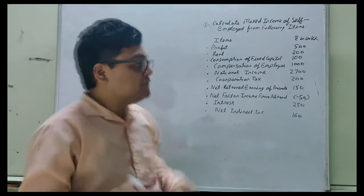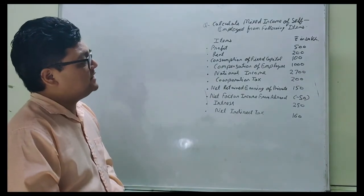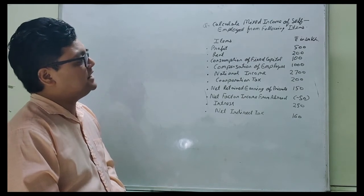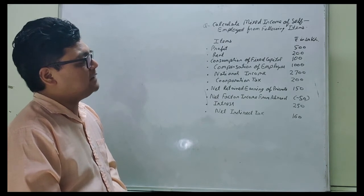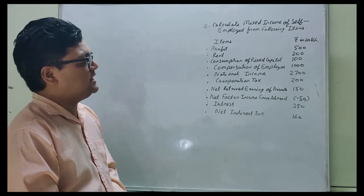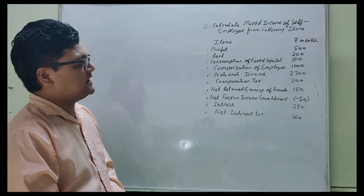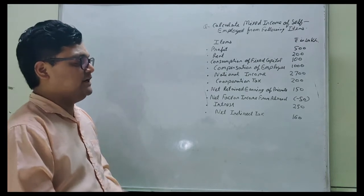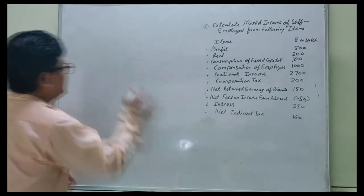How will we calculate it? First of all, let us take a look at the items. Profit 500, Rent 200, Consumption of fixed capital 100, Compensation of employee 1000, National income 2700, Corporation tax 200, Net retained earnings of private 150, Net factor income from abroad minus 50, Interest 250, Net indirect tax 160. Now we will start our numerical.